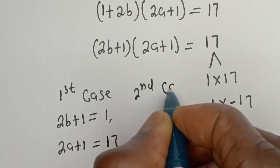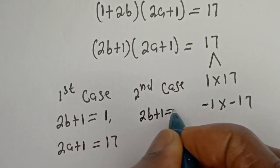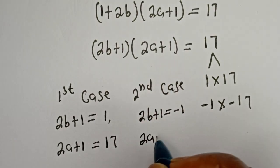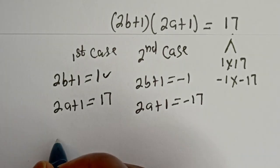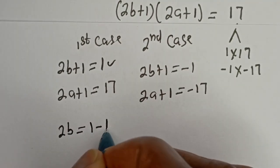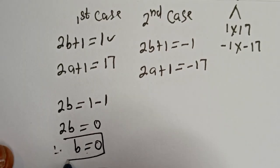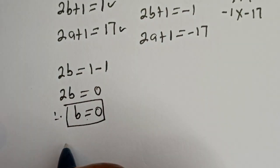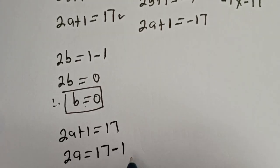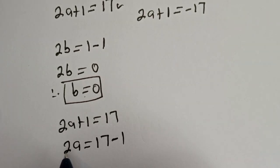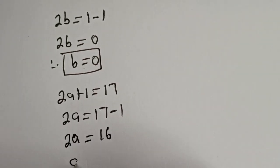The second case: 2b plus 1 equal to minus 1 and 2a plus 1 equal to minus 17. From the first case, 2b is equal to 1 minus 1, so 2b is equal to 0, therefore b is equal to 0. And from 2a plus 1 equal to 17, 2a is equal to 17 minus 1, so 2a is equal to 16, then a is equal to 8.